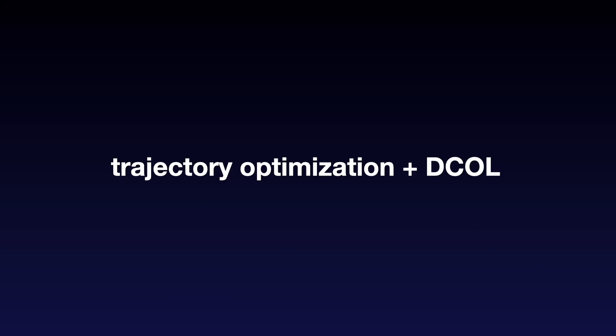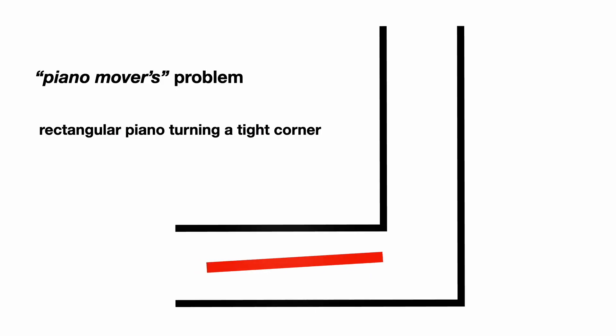Trajectory optimization with collision constraints represented with DCOL are used to solve a variety of challenging motion planning problems. The first of which is the piano movers problem, where a rectangular piano has to move around a tight corner.